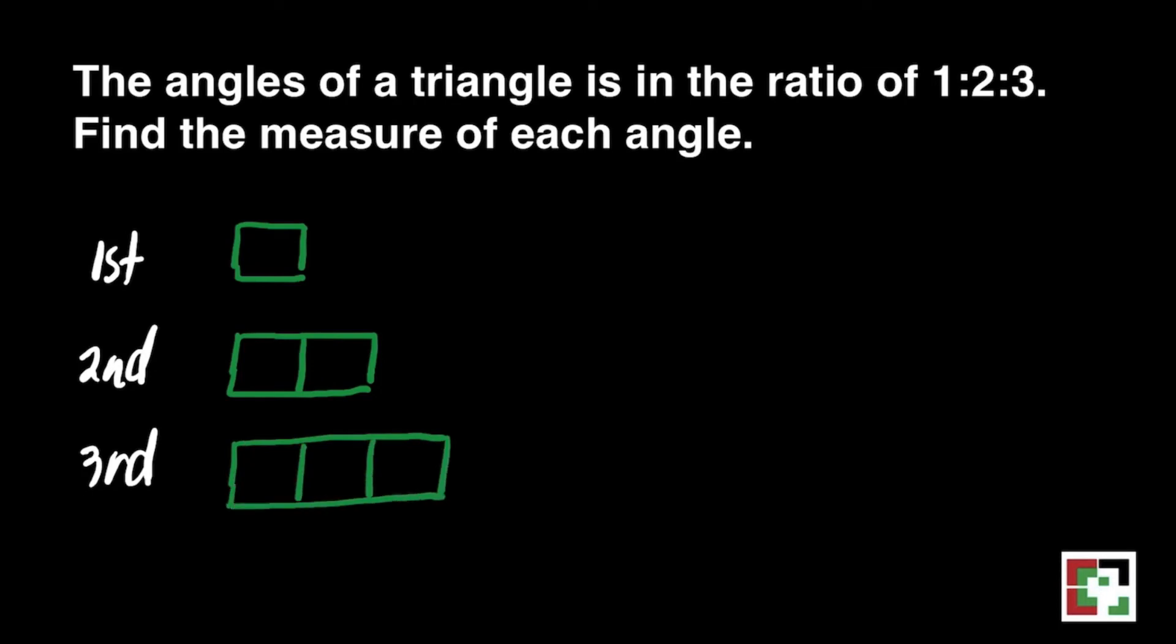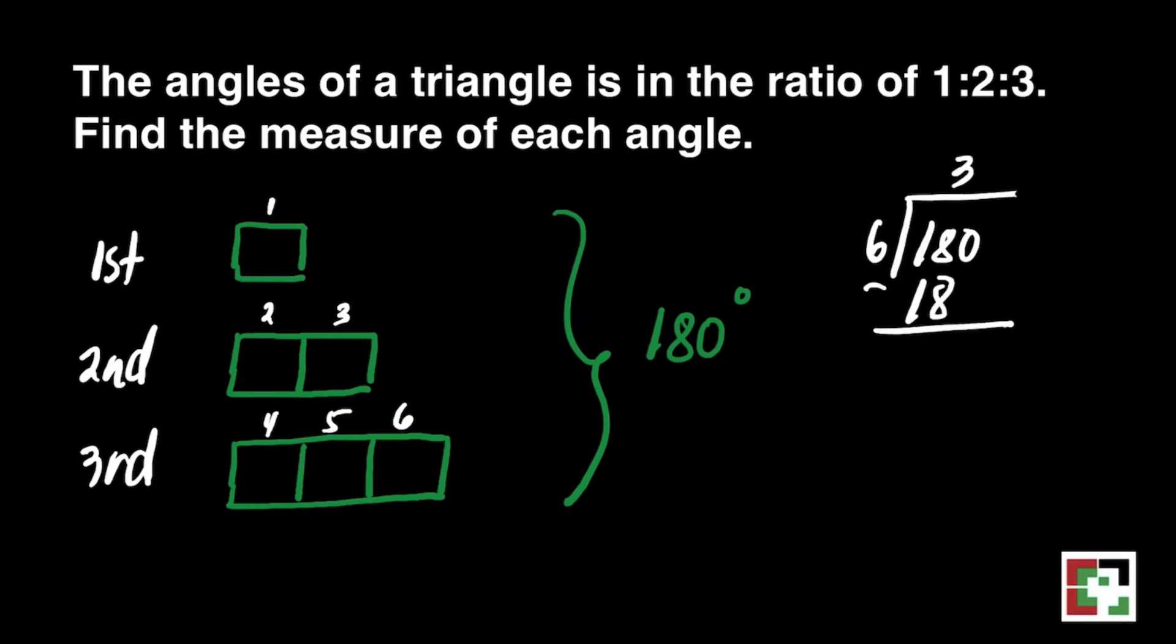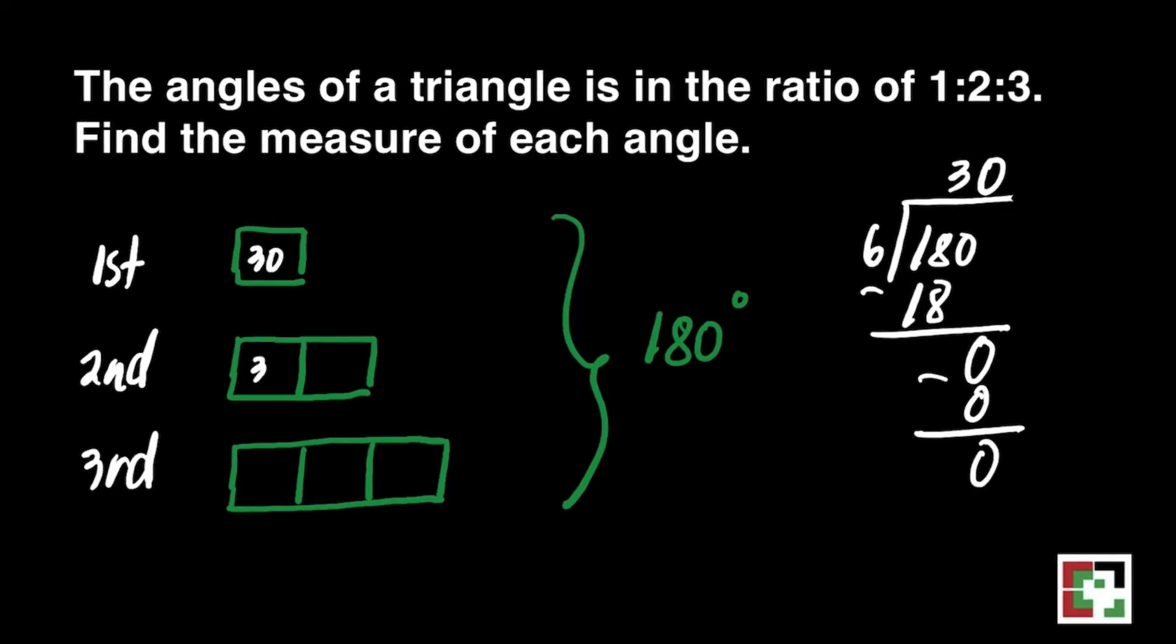We know exactly that the total measure of the angles is 180 degrees. So how are we going to get the value of each box? All we need to do is divide it into 6 because we have 6 boxes there. 180 divided by 6 will give us 30. So in each box, we'll have 30.